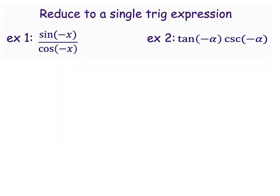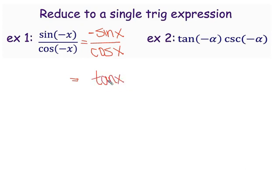Let's put these negative identities to use. We want to reduce this fraction to a single trig expression. Whenever we see sine of a negative x, that is the same as negative sine of x by identity. For cosine of a negative angle, it's just a regular cosine of x. So we're left with negative sine over cosine, which is negative tangent — one of those quotient identities.